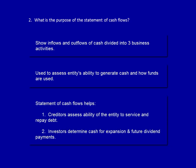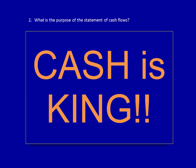This can help a creditor assess the entity's ability to service debt, pay interest, and repay the loan at maturity. It indicates to investors if the company will have enough cash to continue to expand in the future as well as pay dividends. The statement of cash flows is particularly important because cash is king. A company may have healthy net earnings on the statement of earnings, but unless they are managing their cash appropriately, the company will likely fail.